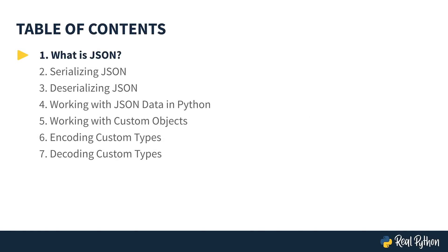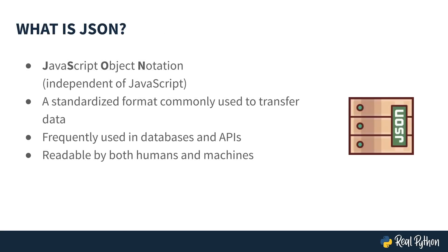In this video, we'll start by learning about what JSON is and what it's used for. JSON stands for JavaScript Object Notation. It was inspired by a subset of the JavaScript language dealing with object literal syntax, but nowadays it's completely independent of JavaScript, and lots of languages support it. JSON is a standardized format commonly used to transfer data. XML and YAML are other standards used for similar purposes, so if you've worked with those before, you'll find the process of working with JSON data to be pretty familiar.